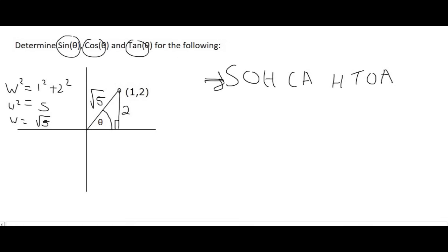Let's start off with sin. We know that sin is equal to the opposite. So the opposite of theta is 2, and the hypotenuse is the square root of 5. Moving on to the cos.